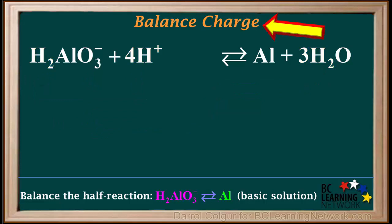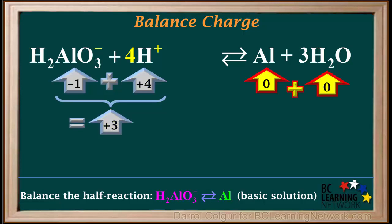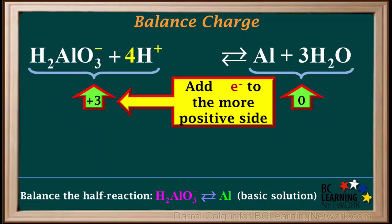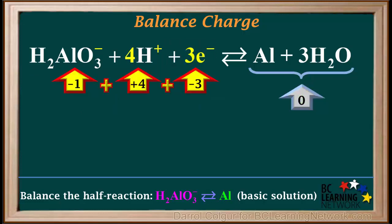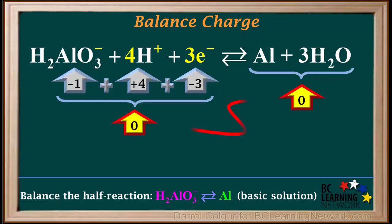The next step is to balance the charge. On the left side, H2AlO3⁻ has an ionic charge of negative one, and 4H⁺ has a total ionic charge of positive four. So the total ionic charge on the left side is negative one plus positive four, which equals positive three. On the right side, the total charge is zero plus zero, which equals zero. In order to balance charge, we must add enough electrons to the more positive side to make the charges equal. Because the charge on the left is positive three and the right is zero, we add three electrons to the left side. Now the total ionic charge on the left is negative one plus positive four plus negative three, which equals zero. So the total charge on both sides is equal, and the charge is balanced.